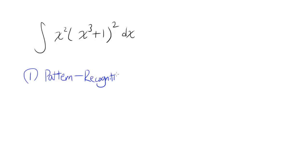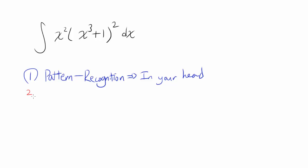Pattern recognition is something you can do in your head. The second way — let me do it in red — is going to be u substitution, and this requires you to write things out.